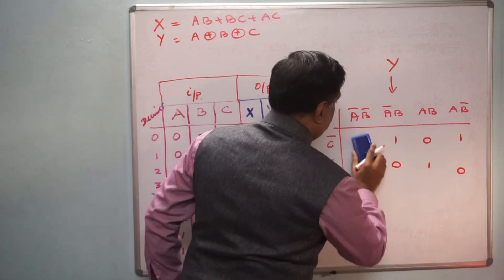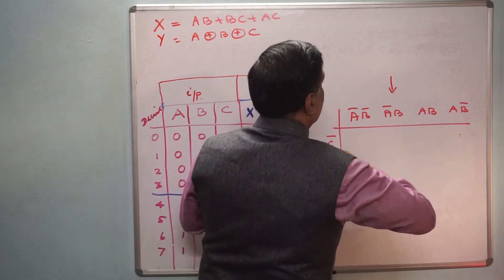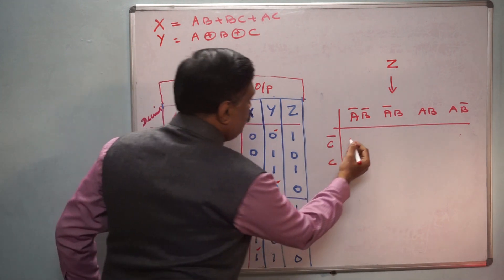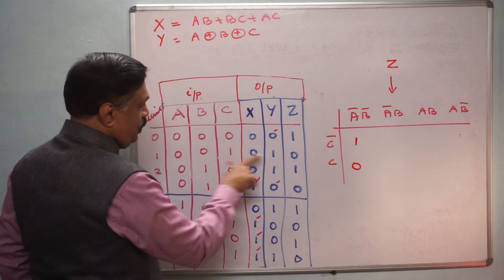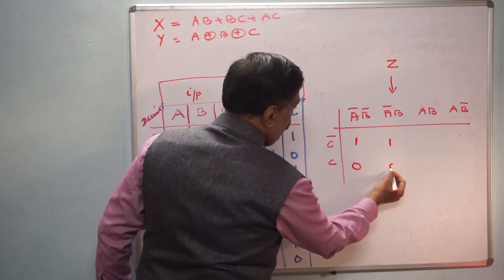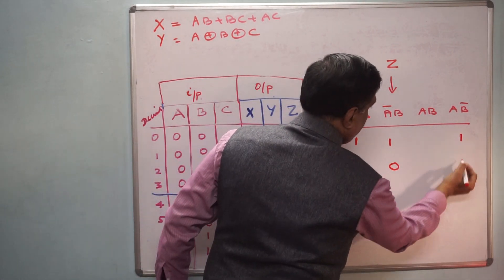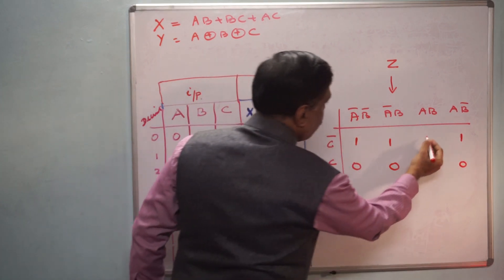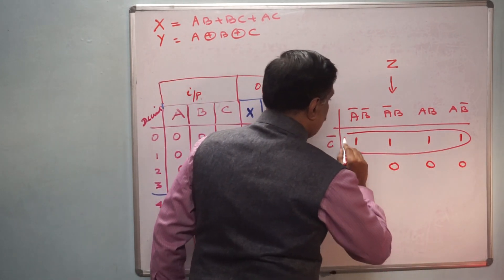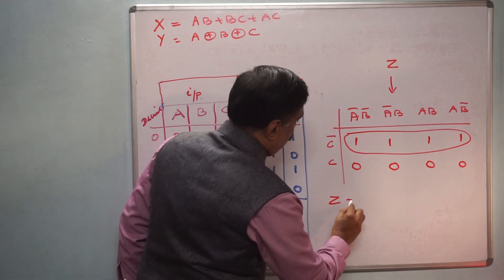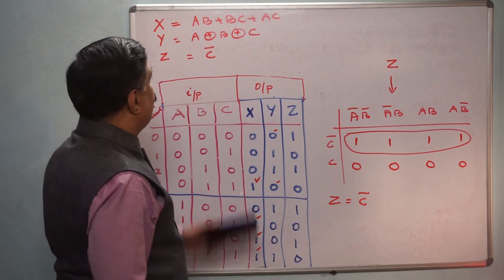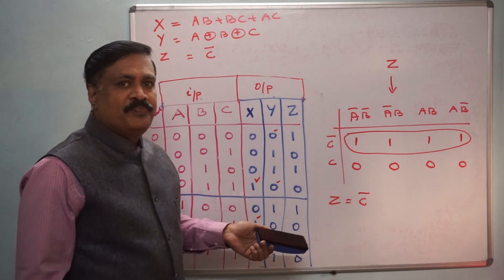Now for Z: for 0 the value is 1, for 1 it is 0, for 2 it is 1, for 3 it is 0, for 4 it is 1, for 5 it is 0, for 6 it is 1, for 7 it is 0. This pattern is a quad — the combination is a quad. Therefore Z = C̄.